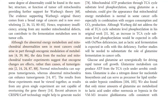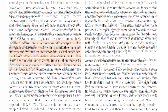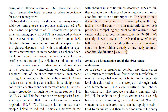Although the abnormal energy metabolism and mitochondrial abnormalities seen in most cancers could arise in part through oncogenic modulation of metabolism, the data from the nuclear and mitochondrial transfer experiments suggest that oncogene changes are effects, rather than causes, of tumorigenesis. The acquisition of dysfunctional mitochondria in macrophages through fusion hybridization with non-metastatic tumor cells provides a compelling argument for the origin of those cancer cells that become metastatic. We recently showed how all of the Hanahan and Weinberg hallmarks of cancer, including the genomic mutations, could be linked either directly or indirectly to mitochondrial dysfunction.